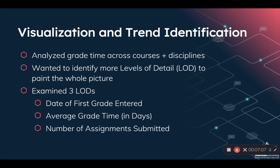We analyzed grade time across all courses and disciplines at a higher education university and wanted to identify more levels of detail past just grade time. Grade time in this case is the time between submission and grade. We examined three metrics specifically: average grade time, date of first grade entered — because it's incredibly important for students to know where they stand early in a semester — and finally, number of assignments submitted.